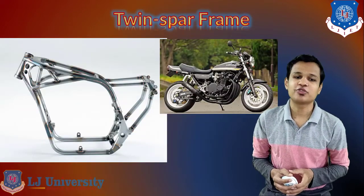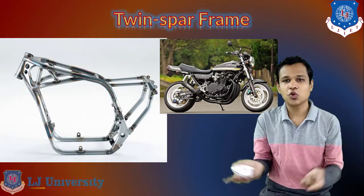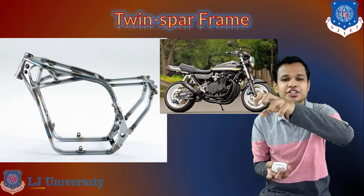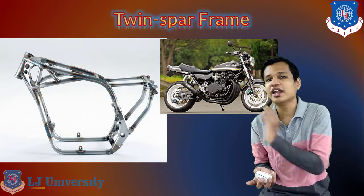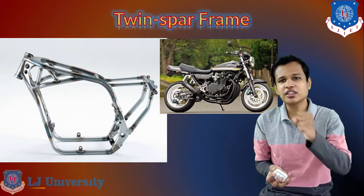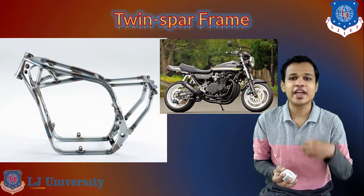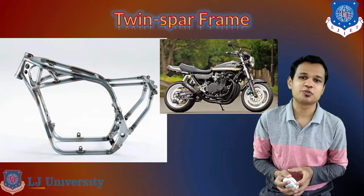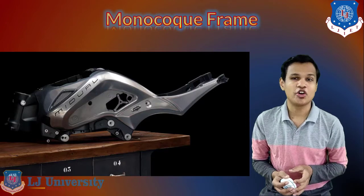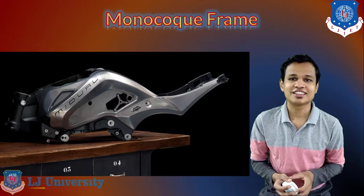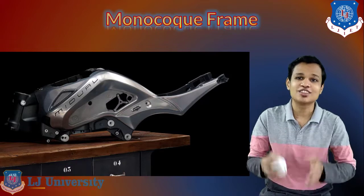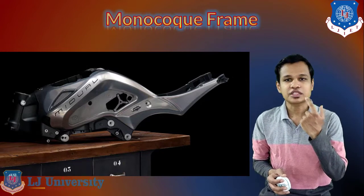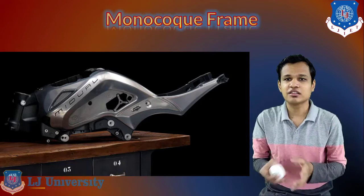In the twin spar frame, as you can see, one floor section has been created on which we can mount the engine, and on the upper part two tube sections are connected as a main tube. The rear part is welded behind the front part, but mostly the components stay the same — only the design of the different types of frame changes. That you can see in the twin spar frame.